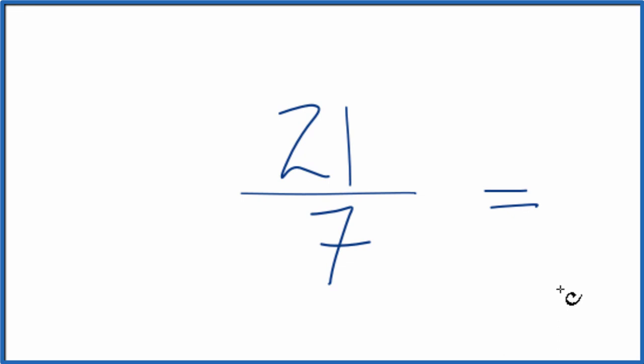To do that we need to find a common factor, something that goes into 21 and 7 evenly.